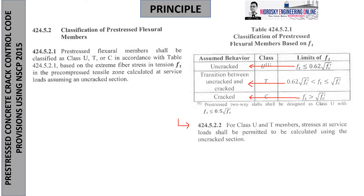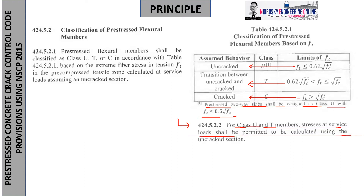A commentary notes that two-way slabs shall be designed as Class U with f sub t not exceeding 0.5√fc', replacing the table value. Under 424.5.2.2, for Class U and T members, stresses at service load shall be permitted to be calculated using the uncracked section.